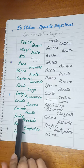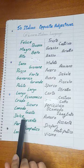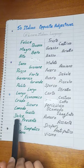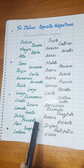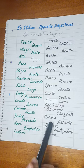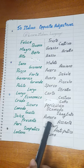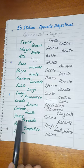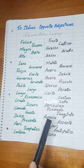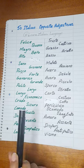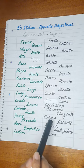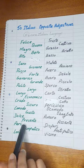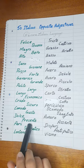Next is Dolce. Dolce means sweet. The opposite of Dolce is Amaro. Amaro means bitter. Dolce — sweet. Amaro — bitter.